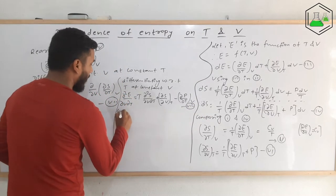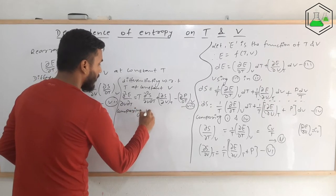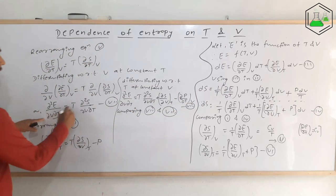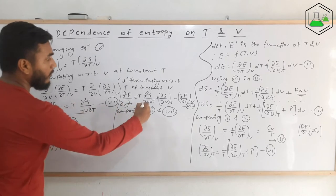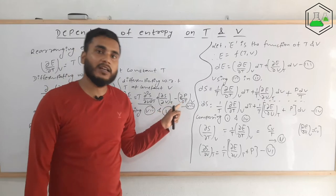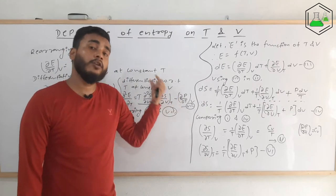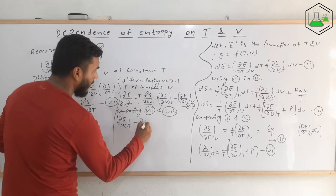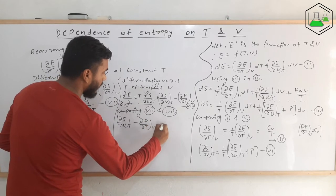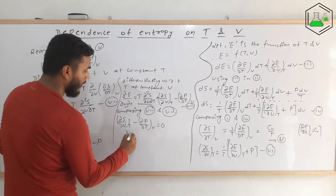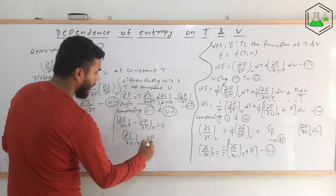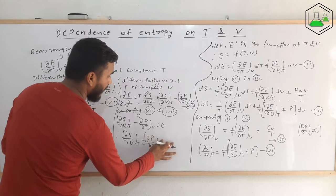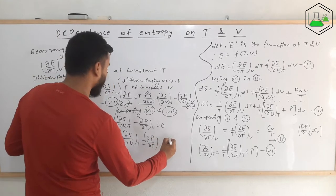Comparing equations seven and eight: the left-hand sides are the same (∂²E/∂V∂T = ∂²E/∂T∂V) and one term on the right is the same. The remaining extra terms must equal zero, so: (∂S/∂V)_T − (∂p/∂T)_V = 0, which gives us (∂S/∂V)_T = (∂p/∂T)_V. This is equation number nine — a Maxwell relation.